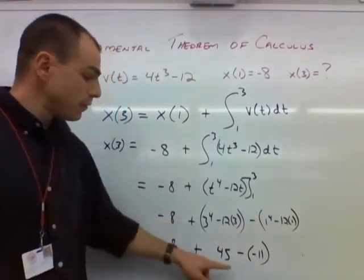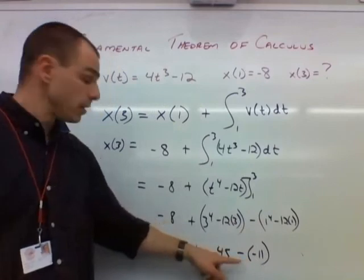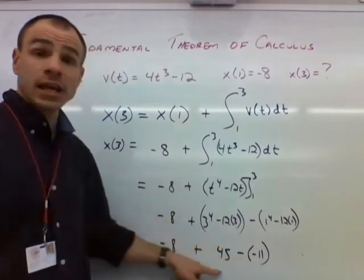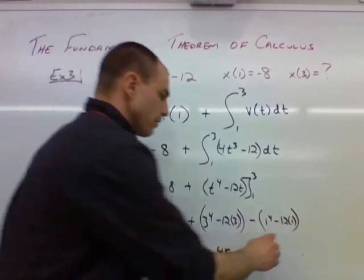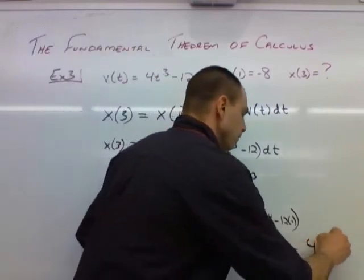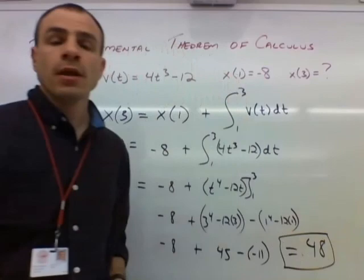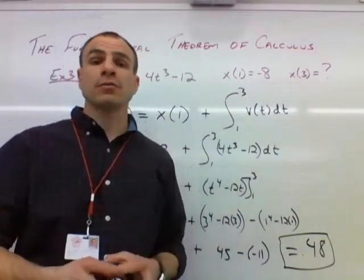So we have negative 8 plus 45 plus another 11. So negative 8, 45 minus 8, that's going to be 37. And then we're going to add 11 to that. So it looks like we have a final answer of 48. So that is the position of the particle at t equals 3.